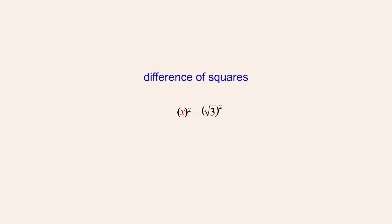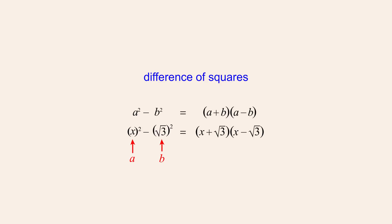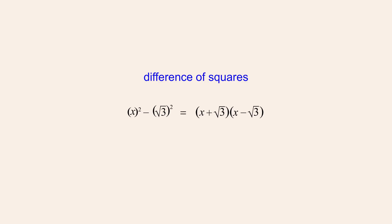So x corresponds to the first squared term a, and the square root of 3 corresponds to the second squared term b. Therefore, the factors a-plus-b and a-minus-b are x plus the square root of 3 and x minus the square root of 3. So these are the factors of x-squared minus the square root of 3 squared, or x-squared minus 3.